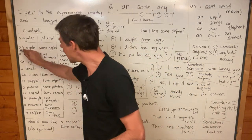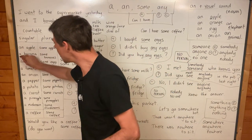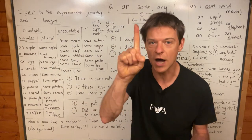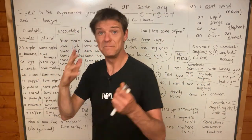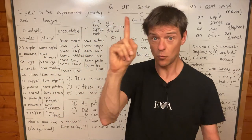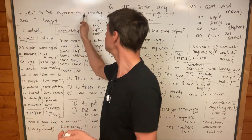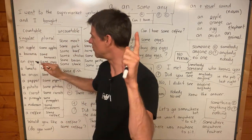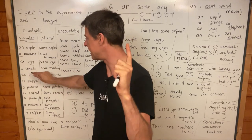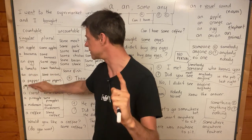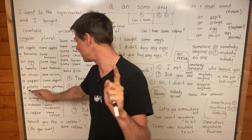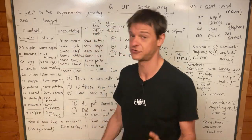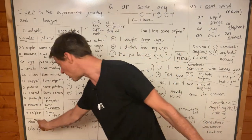We use 'an' or 'a' if it's singular — if there's one. 'An' means one. I went to the supermarket yesterday and I bought one apple, one banana, one egg, one tomato, one onion, one pepper, one potato, one carrot, one pineapple, one mushroom, one coffee.